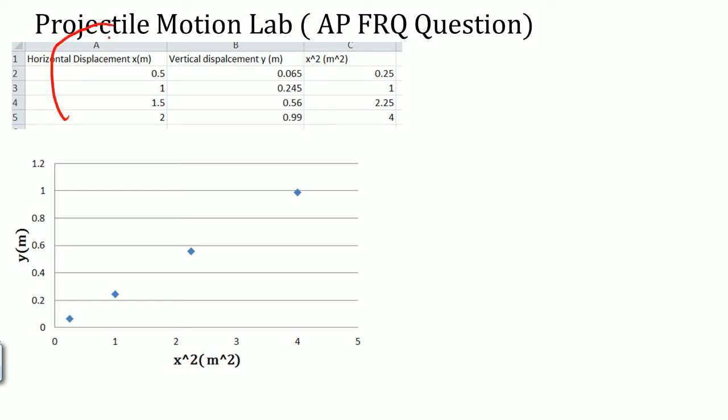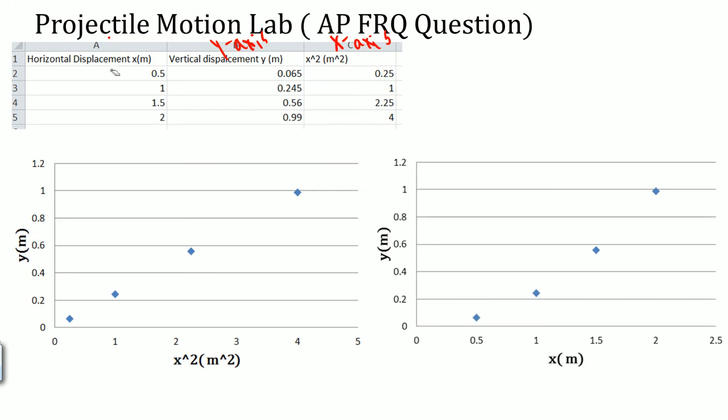If you did it the other way, I have the other one here. This one, the second one is when I graph horizontal displacement as my x-axis and vertical displacement as my y-axis. The vertical displacement is always your output.